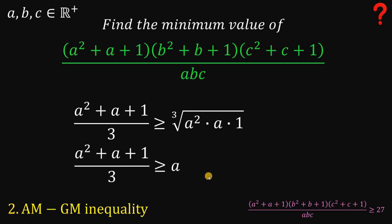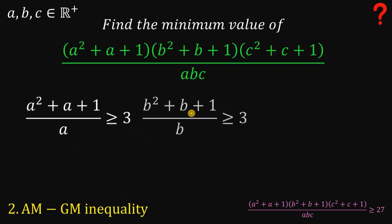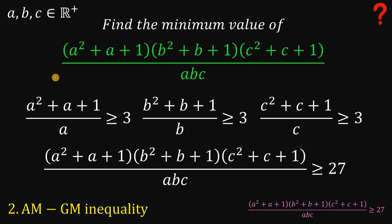Since A squared times A times 1 equals A cubed, and the cube root of A cubed is just A, rearranging gives us A squared plus A plus 1 all over A is greater than or equal to 3. Similarly, B squared plus B plus 1 all over B is greater than or equal to 3, and C squared plus C plus 1 all over C is greater than or equal to 3. Multiplying all of these inequalities together, the full expression is greater than or equal to 27, meaning its minimum value is 27.